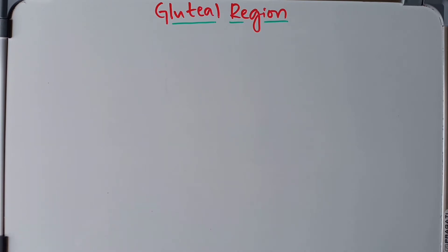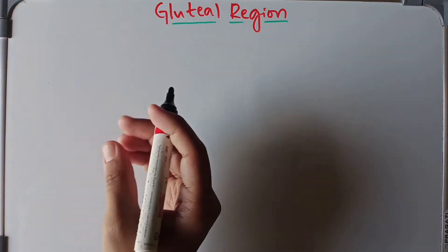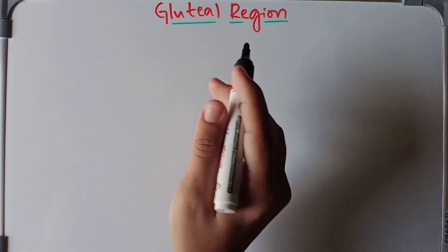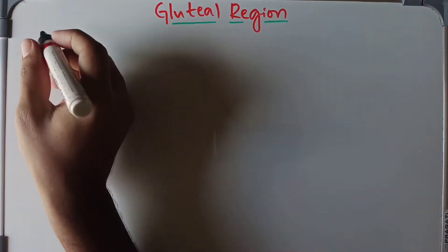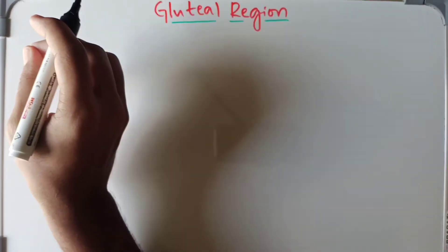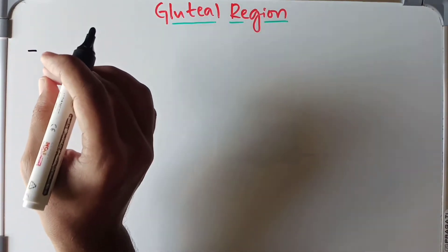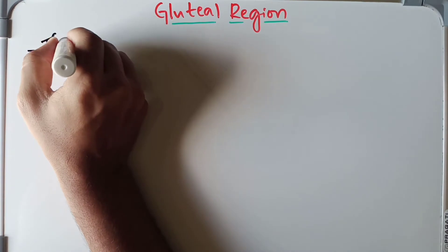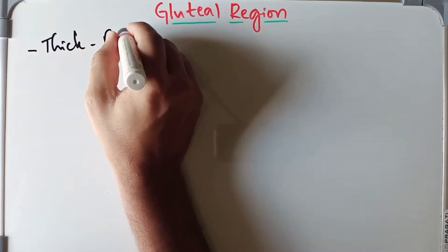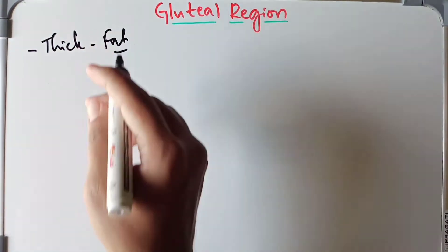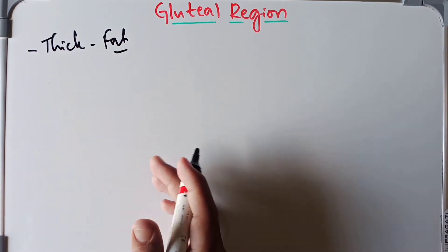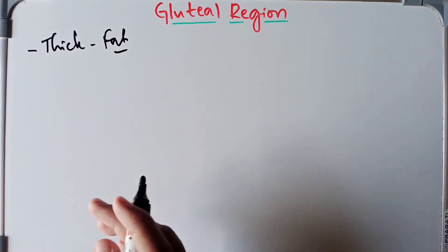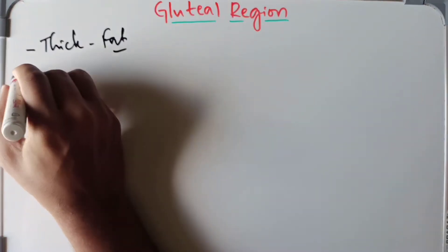Welcome back. Today we are going to discuss the superficial fascia and some of the cutaneous nerves, arteries, and lymph vessels in the gluteal region. The superficial fascia in the gluteal region is thick and contains abundant subcutaneous fat, particularly in adult females, which is responsible for the characteristic round contour of the buttock.